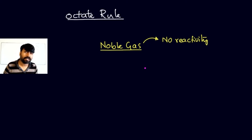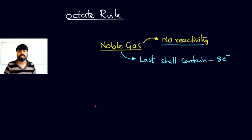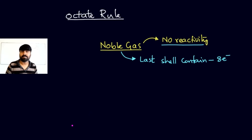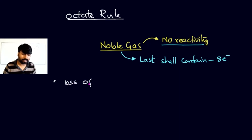Kossel and Lewis observed the reactivity and electron patterns of noble gases. In noble gas elements, the last shell contains eight electrons. From this, Kossel and Lewis concluded that every atom has a tendency to gain or lose electrons in order to have eight electrons in their outermost shell. This can be achieved by loss of electron or by gain of electron.